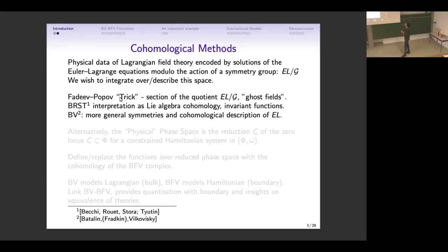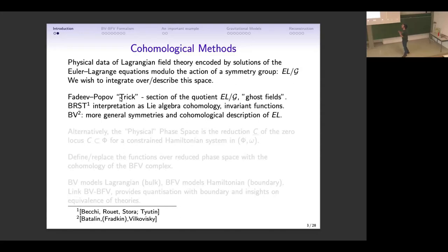In order to do so, one introduces ghost fields — Grassmann-valued fields on your manifold — which were later interpreted by BRST as the generators of the Lie algebra cohomology. Essentially, what this method does is give a cohomological description of the space of invariant functions over your manifold. Later, Batalin and Vilkovisky generalized this to more general symmetries, and it was realized that their method also gives a cohomological description of the critical locus of the action — the space of solutions of your variational problem.